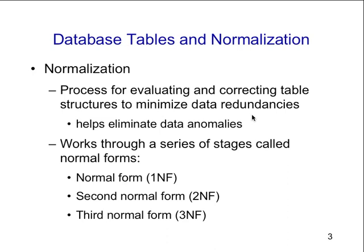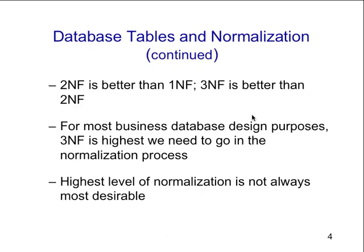Normalization works through a series of stages called normal forms. There is first normal form, second normal form, and third normal form. Second normal form is a better version of the first; third is a better version of the second. For most database designs, third is the highest you need to go in the normalization process. The highest level is not always the most desirable — primarily it makes queries harder, harder to find data, and requires too many joins, lowering efficiency and speed.